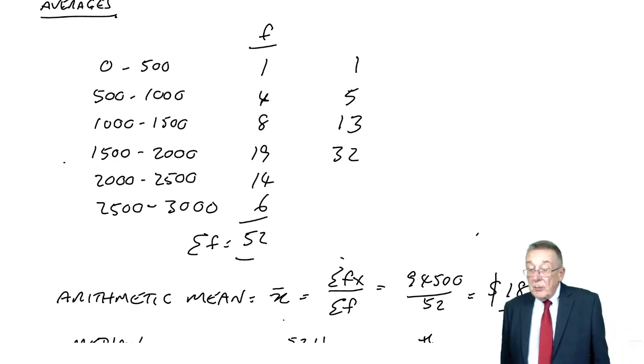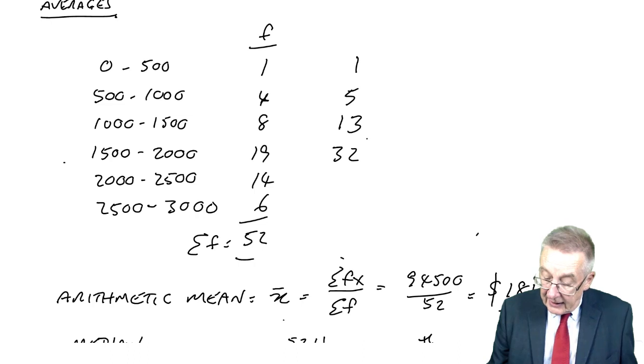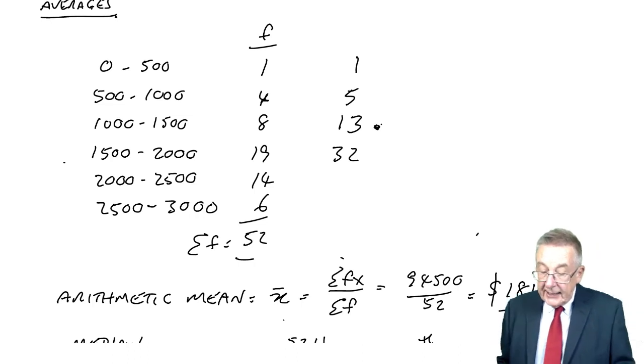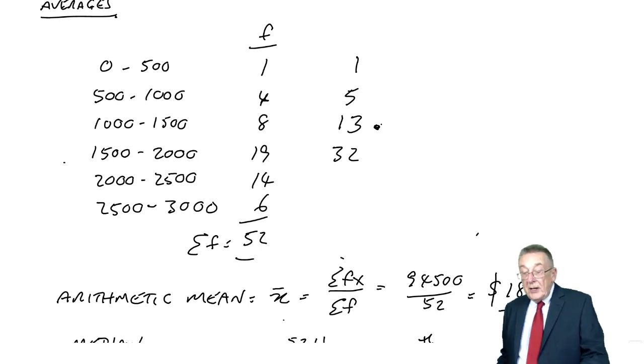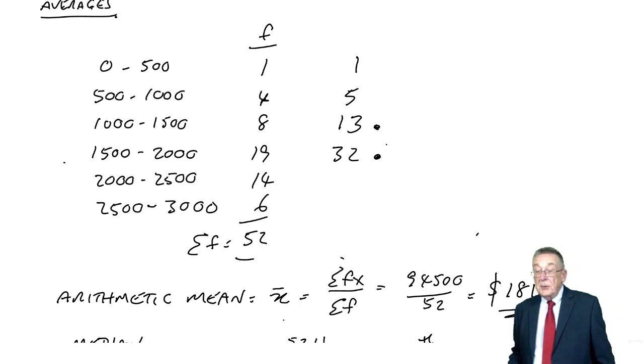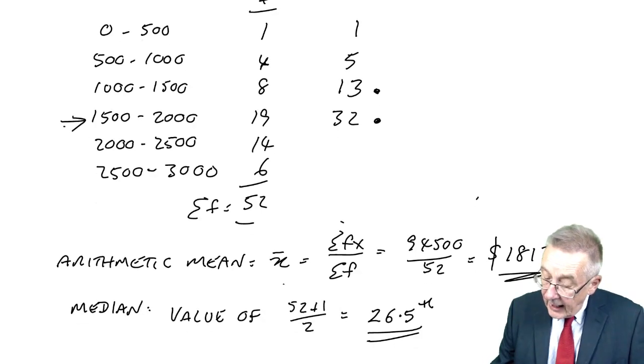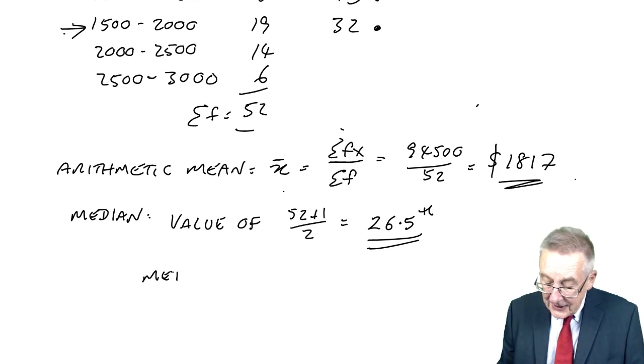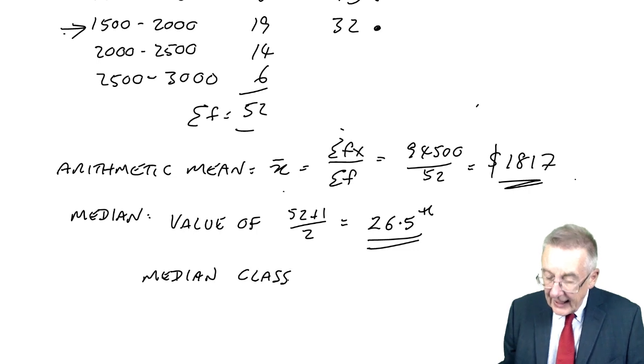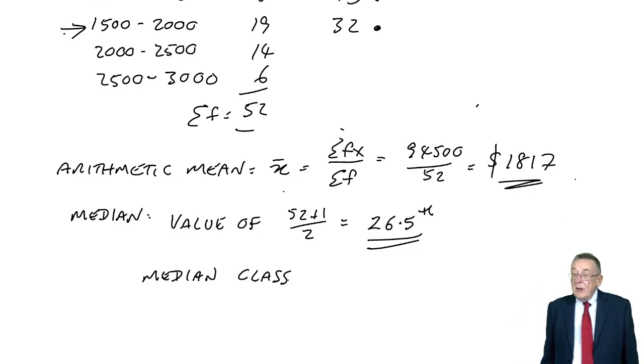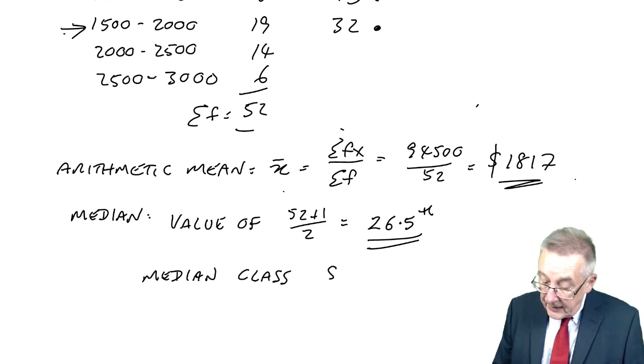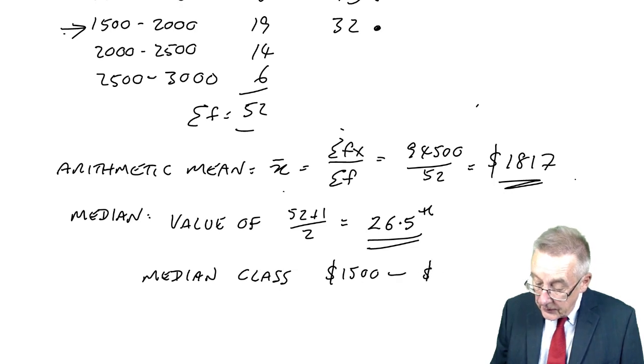I want the 26th and a half. We know the 13th was at 1500. We know the next 19 up to the 32nd were 1500 to 2000. So surely the 26th and a half must be between 1500 and 2000. If all that's required is the median class, we know that the 26th and a half is somewhere between 1500 to 2000. And that may be all that's required.